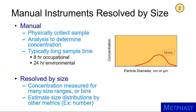Manual means that a sample must be physically collected and then analyzed to measure concentration. Sampling must be conducted long enough to collect sufficient material for analysis, typically 8 hours for occupational and 24 hours for environmental sampling.